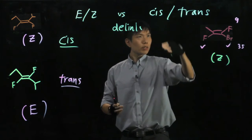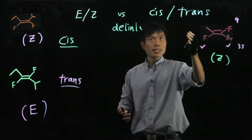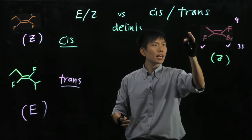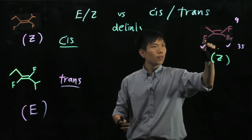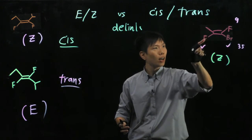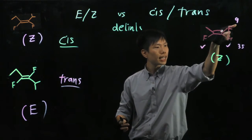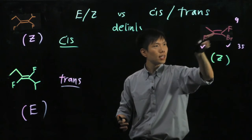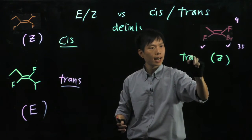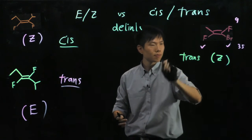But if I would like to classify it as cis or trans — the fluorine identical groups are on opposite ends. So this could be classified as a trans isomer.